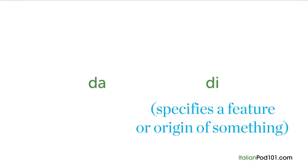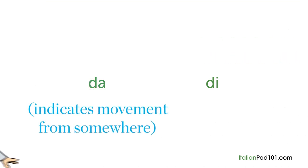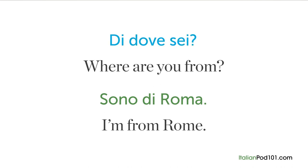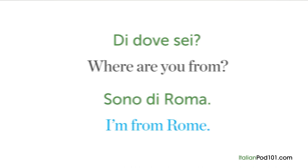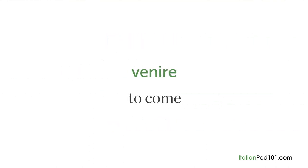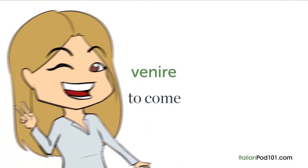DI specifies a feature or origin of something, usually with the verb 'essere' — to be. DA indicates movement from somewhere. So you can say 'Di dove sei?' — where are you from? — 'Sono di Roma' — I'm from Rome. But 'Da dove vieni?' — where do you come from? — 'Vengo da Roma' — I come from Rome. This is because 'venire' — to come — is a verb of movement.